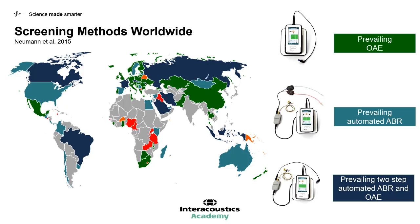We can see that different countries around the world have different preferences for which method they choose. In Europe we see a predominantly OAE focus, whereas in the Americas and Australasia we see a predominantly automated ABR or a two-step automated ABR and OAE approach.